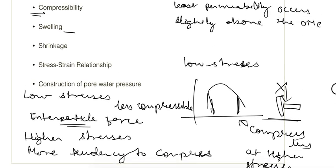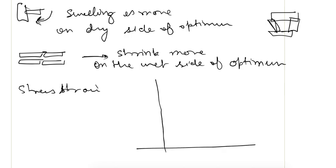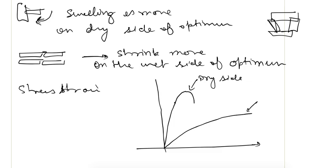The next point is the stress-strain relationship. On the dry side of optimum, stress can be increased while strain does not increase as much, but at higher stresses the structure will break completely — showing a peak. For the wet side of optimum, strain increases as stress increases and it will not show a peak as it does on the dry side.